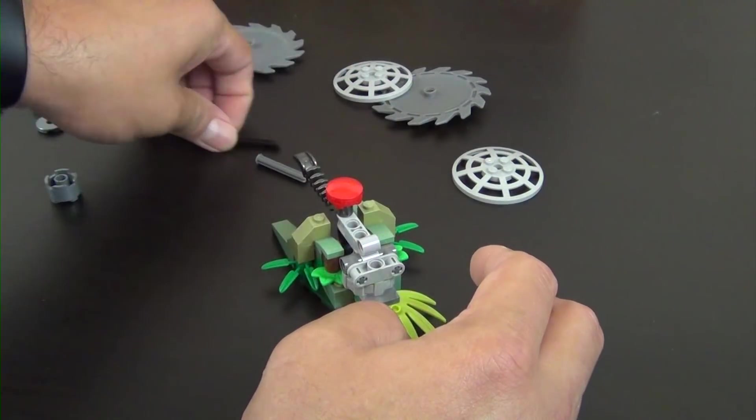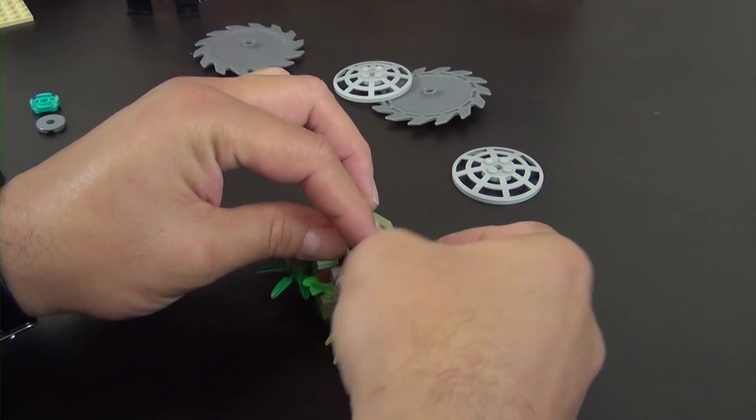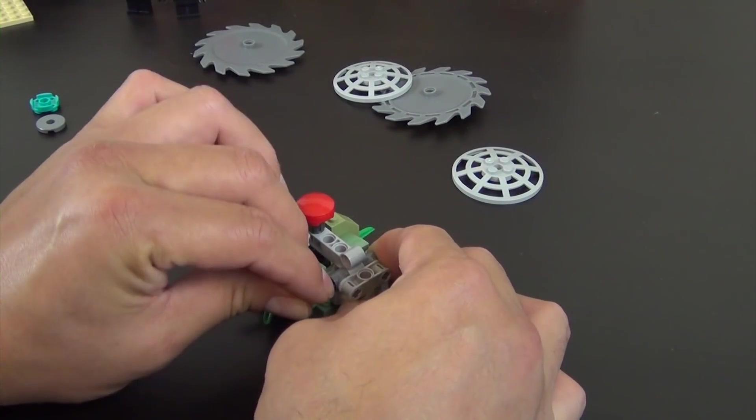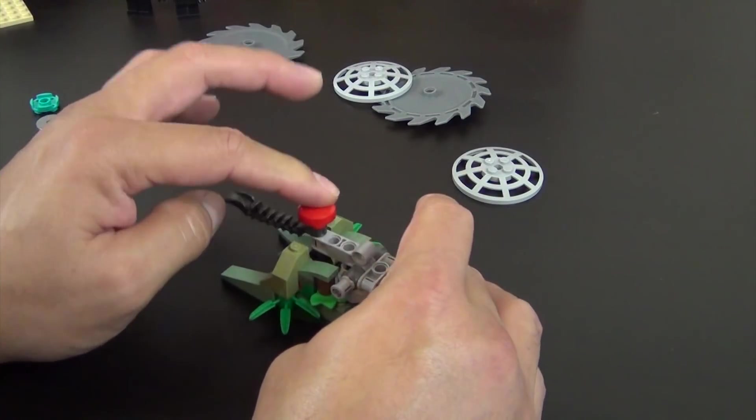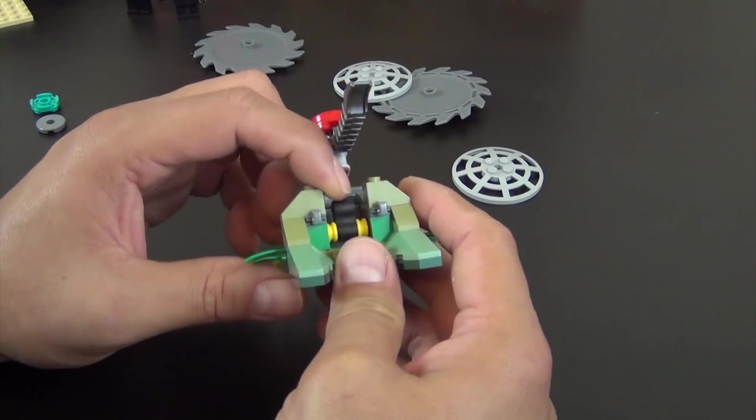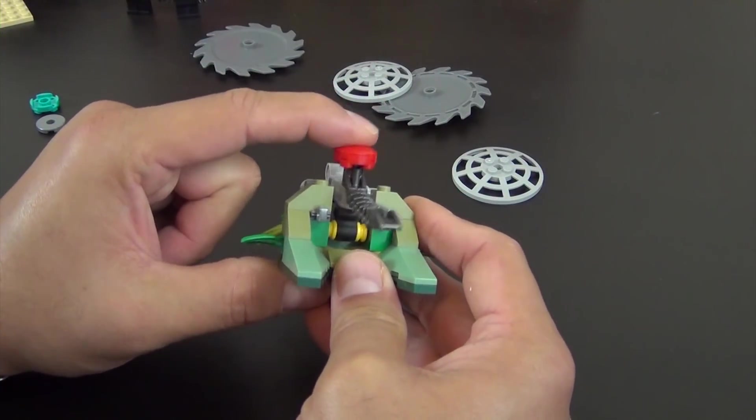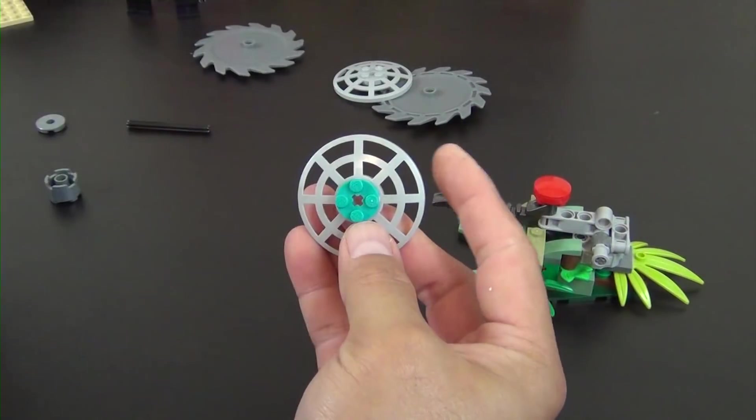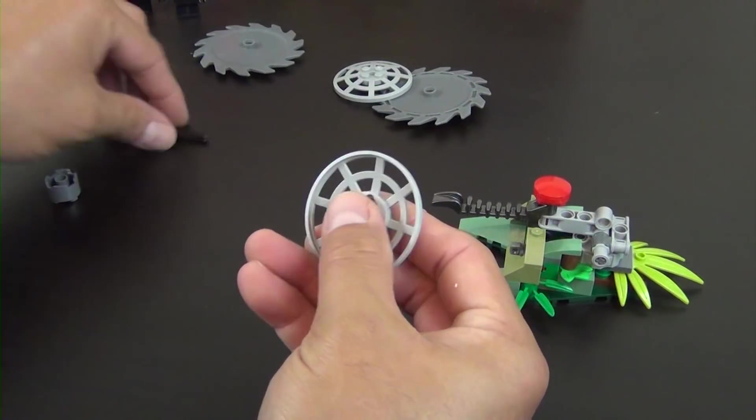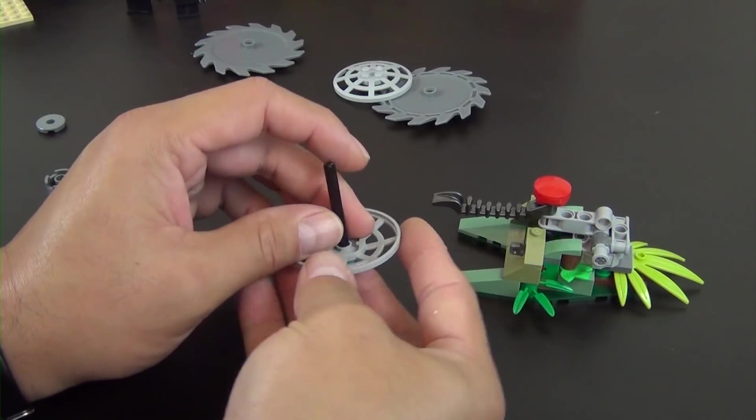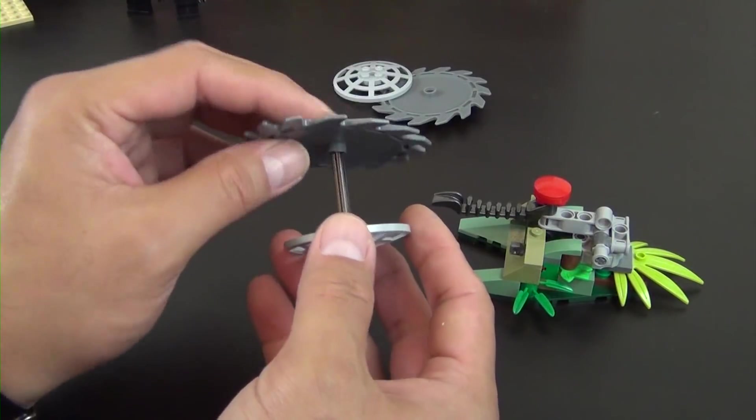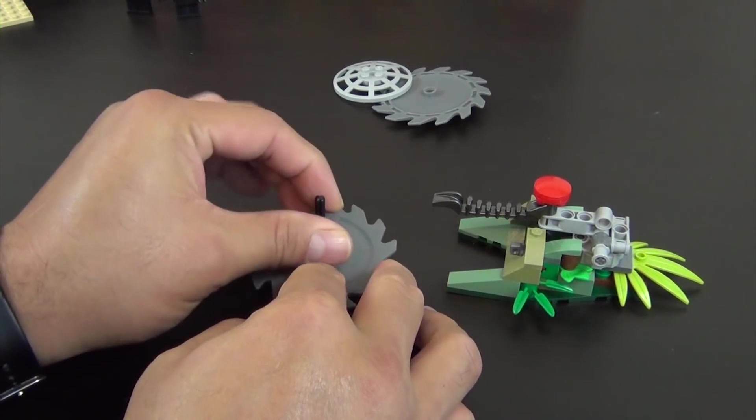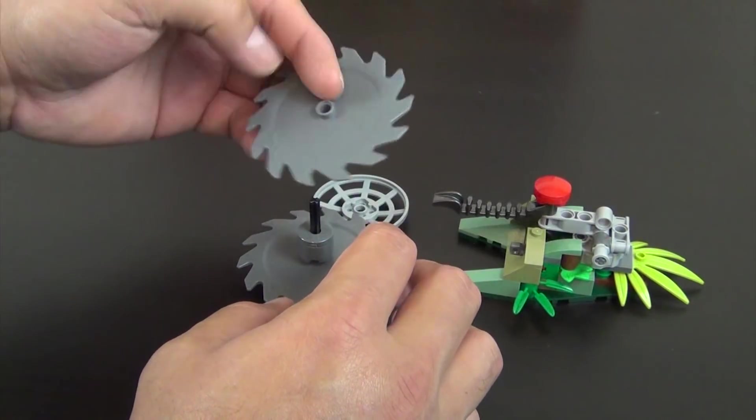This will go like that and then that'll go there. This will slide in here. We have an axle that slides through. I'm going to put a bushing on this side. So that creates a little plunger. That little rubbery technic piece in there cushions it when you push down on it. Next we have a radar dish. Slide a technic axle through there, one of these blades, another blade.